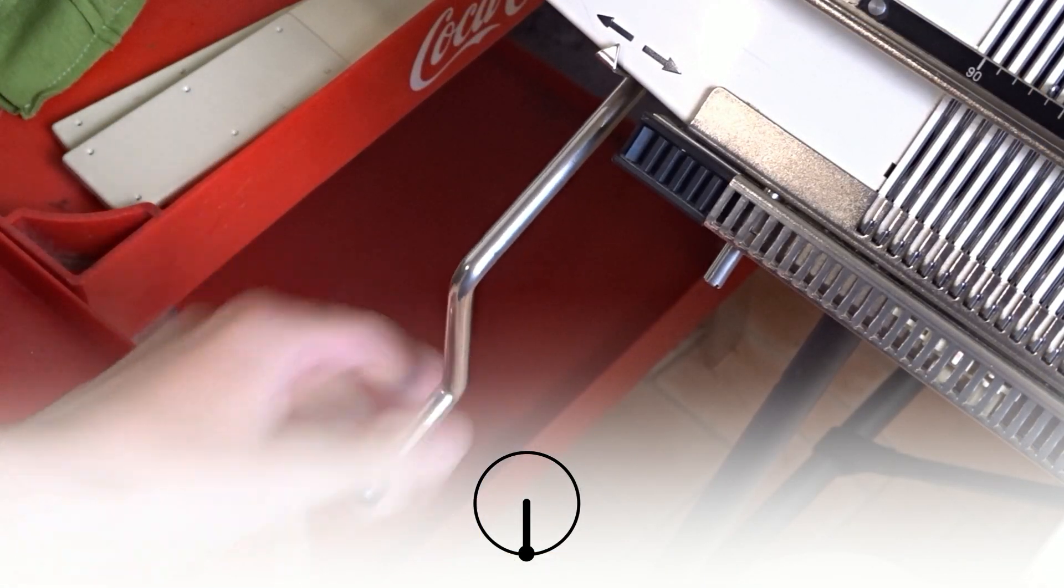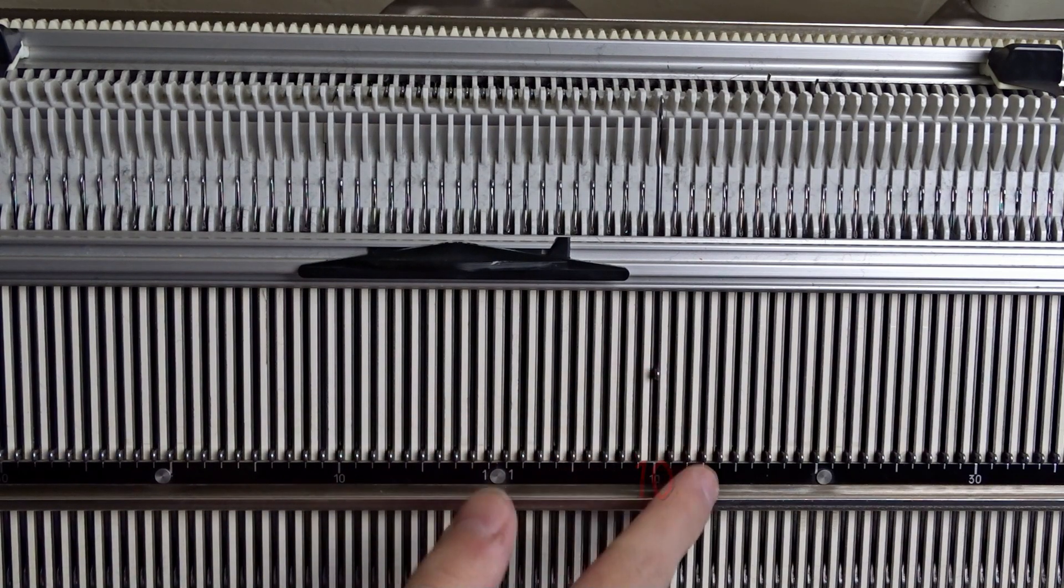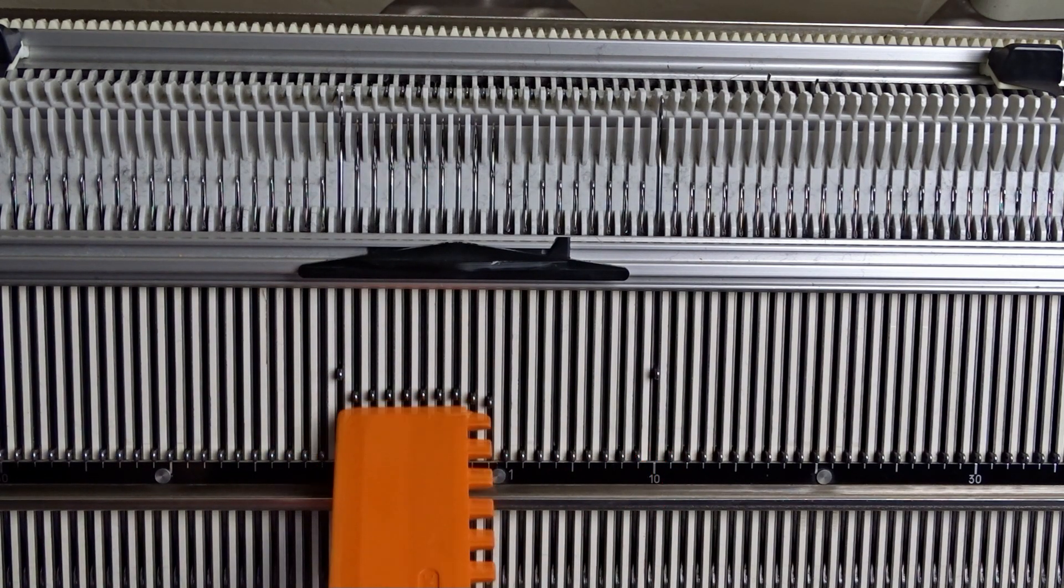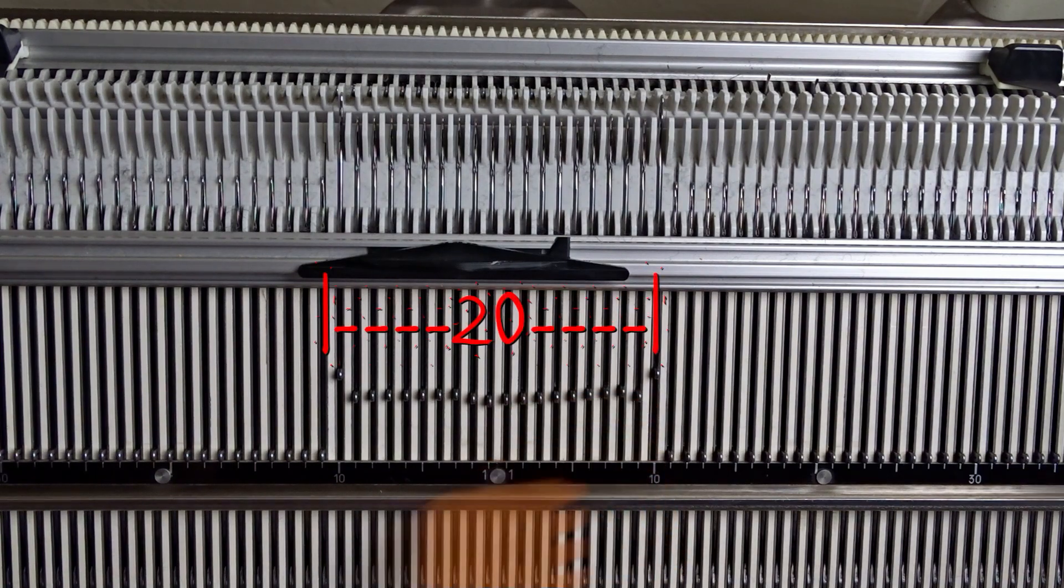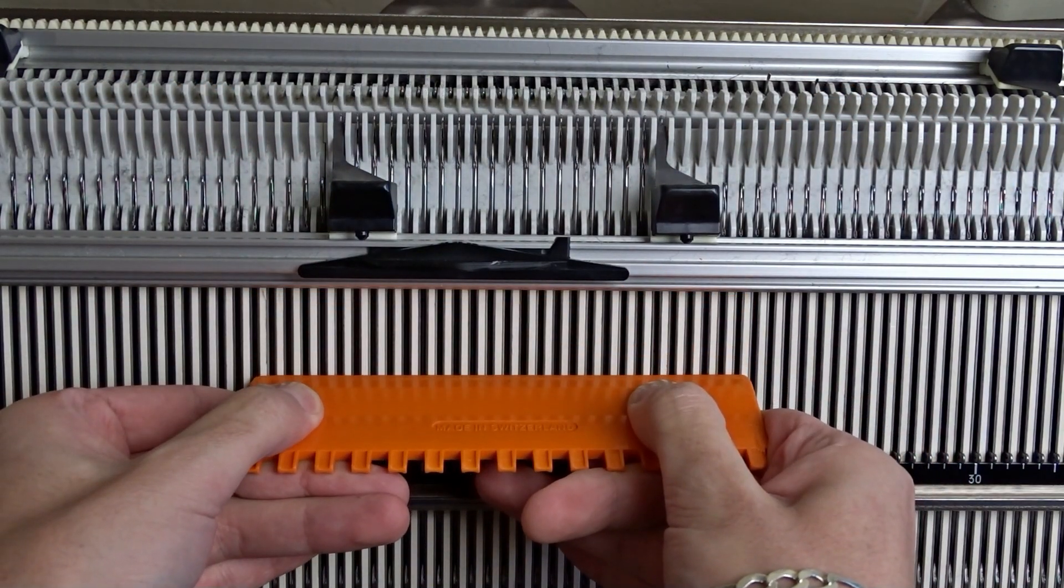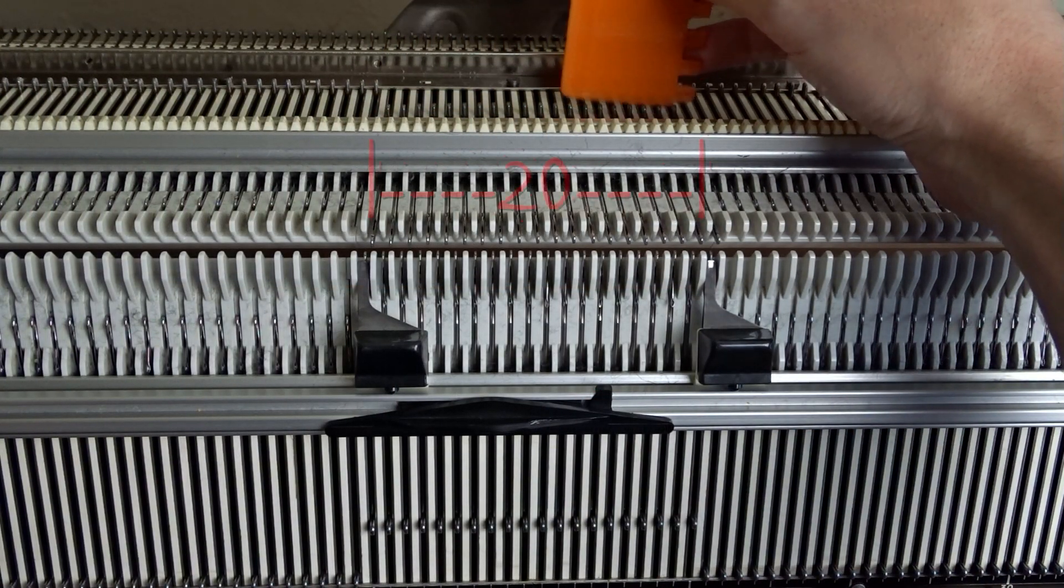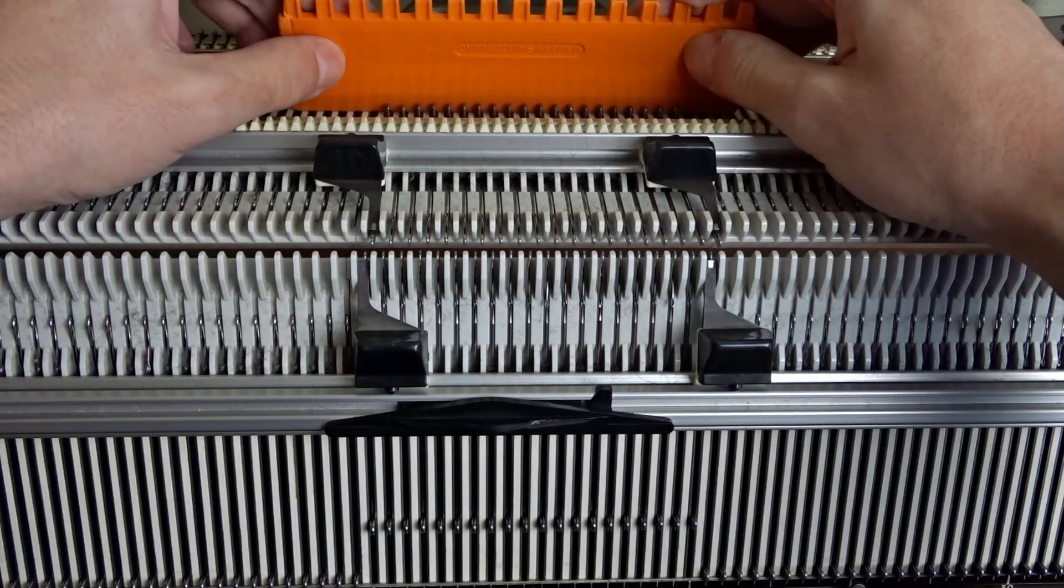Rotate the racking handle to its lowest position and make sure the beds are centered. Raise 20 needles on the front bed, 10 to the left and 10 to the right side of 0. You can make the strip wider by raising more needles. In my case the strip is 10 centimeters wide. Raise 20 needles on the back bed and place the edge springs on the last working needles.